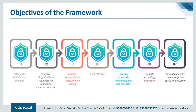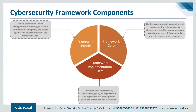The NIST cybersecurity framework consists of three main components: the core, implementation tiers, and profiles. The framework core provides a set of desired cybersecurity activities and outcomes using common language that is easy to understand, guiding organizations in managing and reducing cybersecurity risks. The framework implementation tiers provide context on how an organization views cybersecurity risk management and guide organizations to consider the appropriate level of rigor, often used to discuss risk appetite, mission priority, and budget. The framework profiles are an organization's unique alignment of requirements, objectives, risk appetite, and resources against the desired outcomes of the framework core, primarily used to identify and prioritize opportunities for improving cybersecurity.